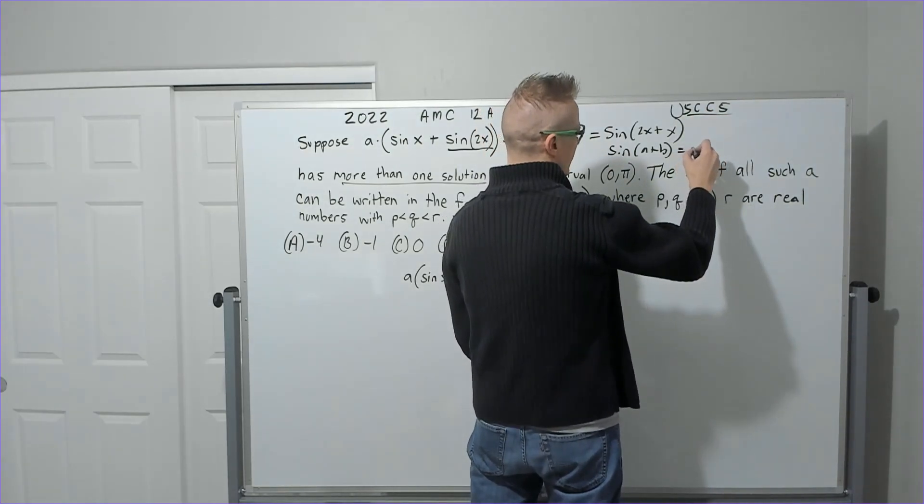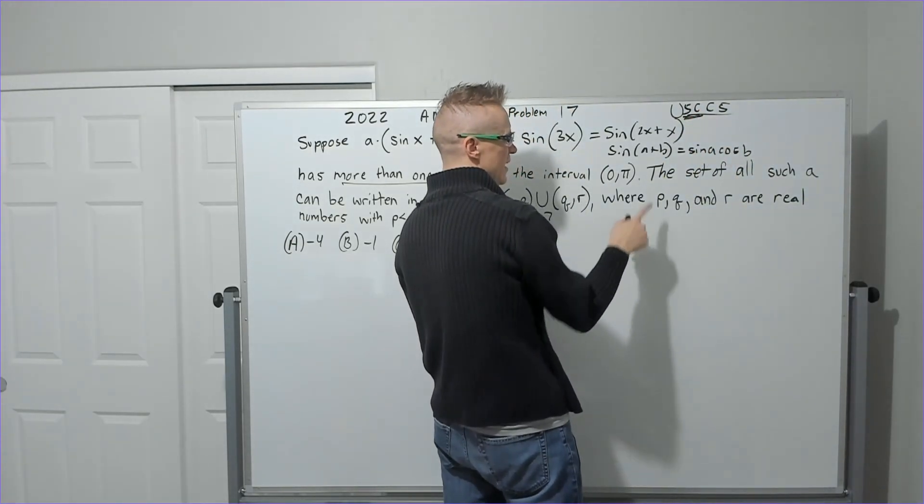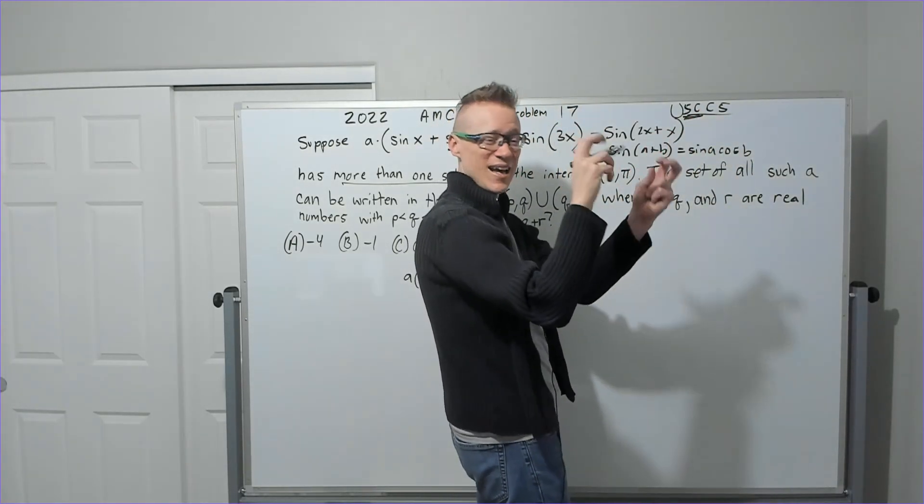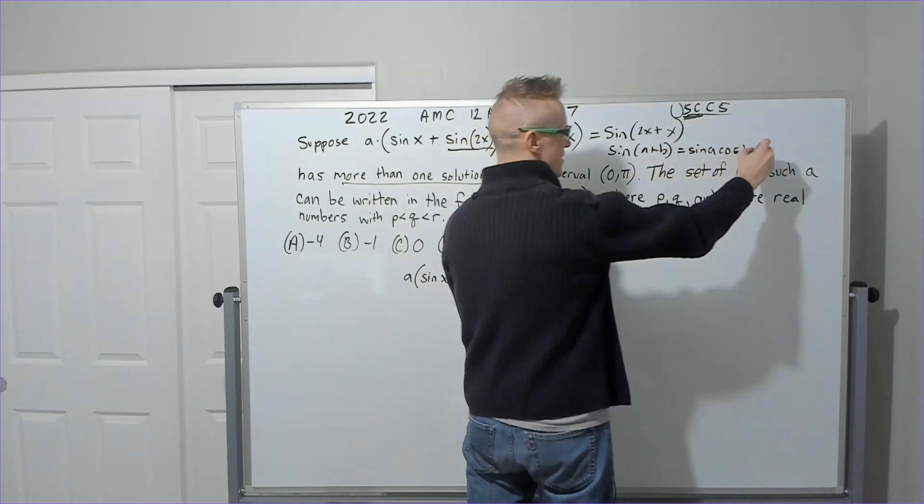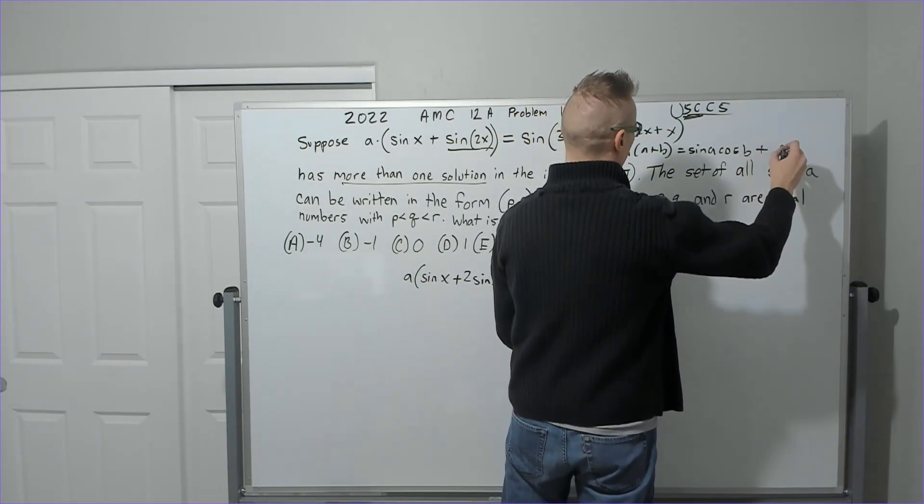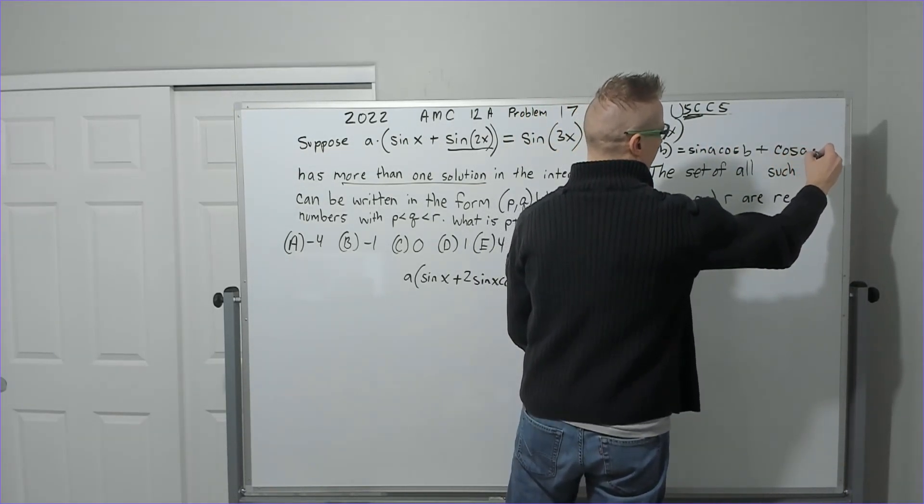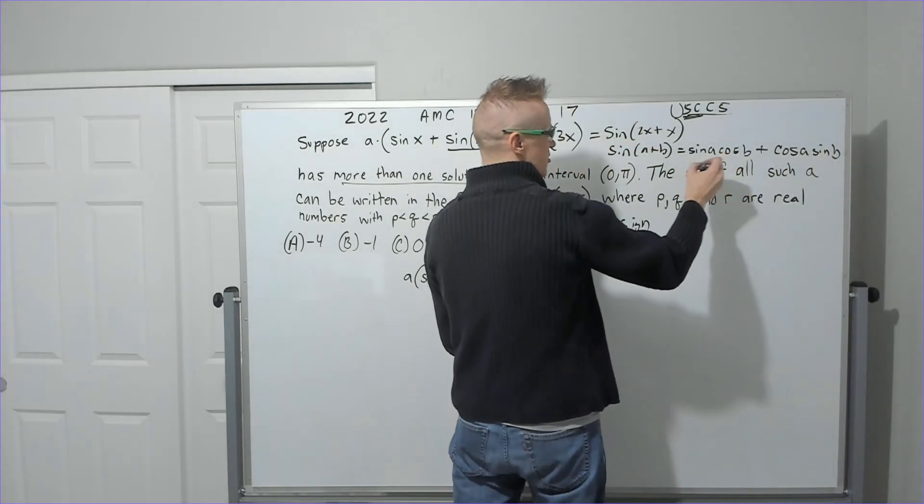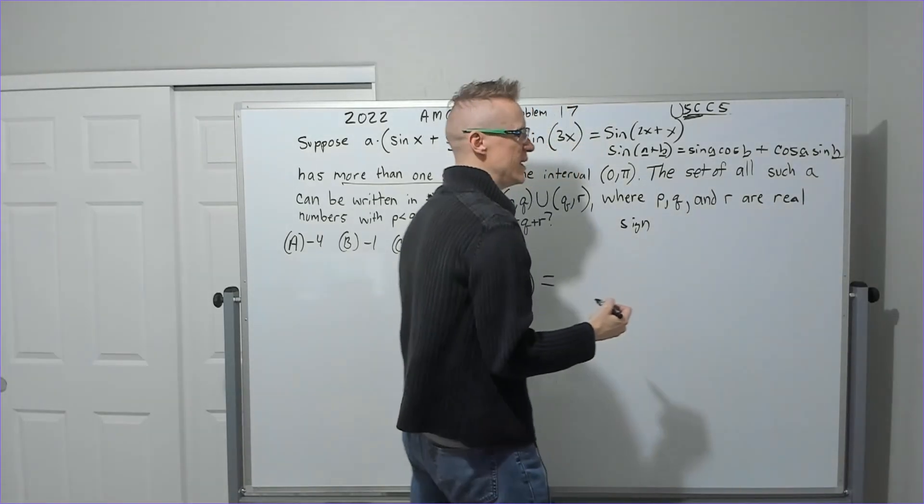It's going to be sine A cos B, that's the S, C part. And then same sign is sign. And so this is a plus, this is a plus. And you're going to have sine A cos B. Now we'll do the C, S. It'll be cos A sine B. I also remember it goes AB, AB, AB, in that order each time.